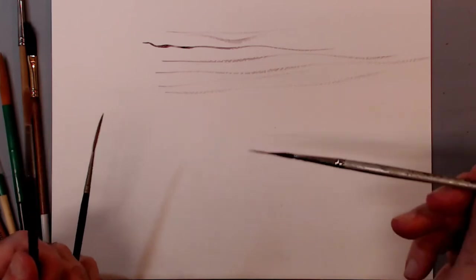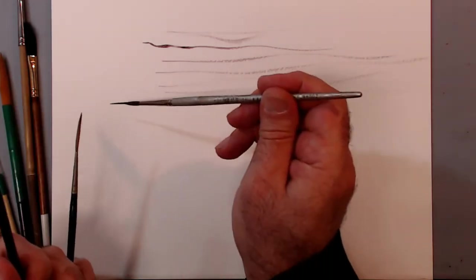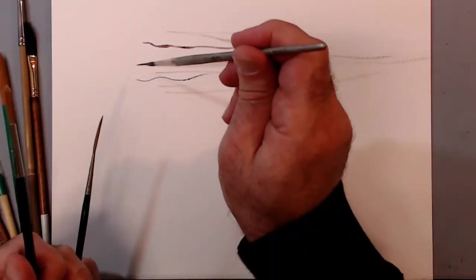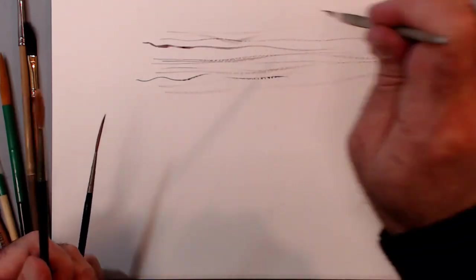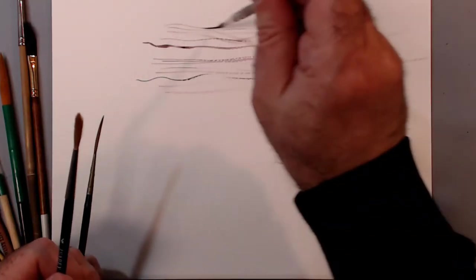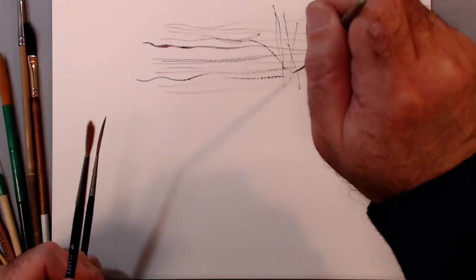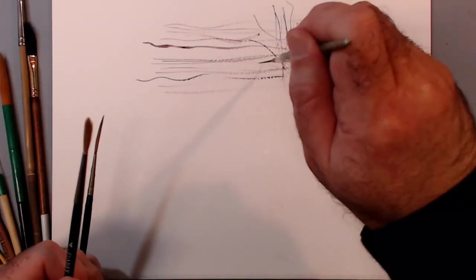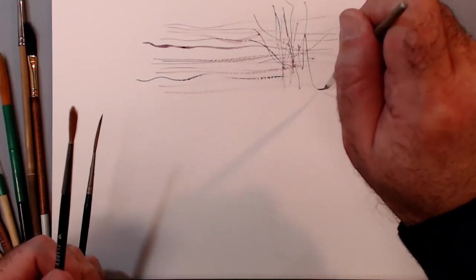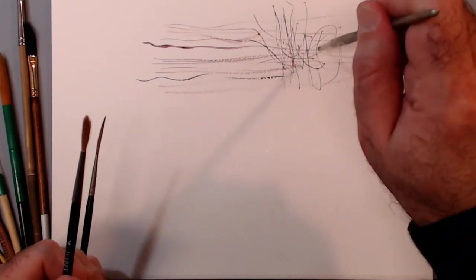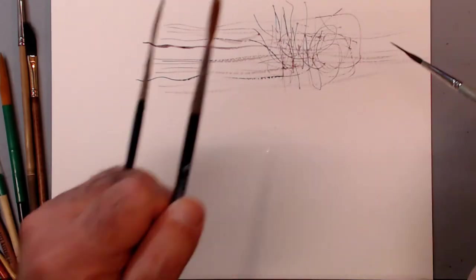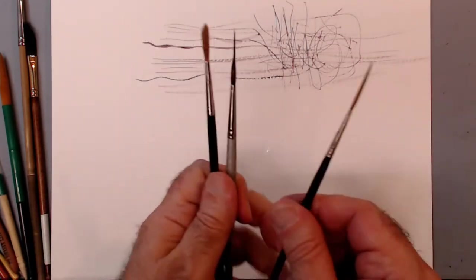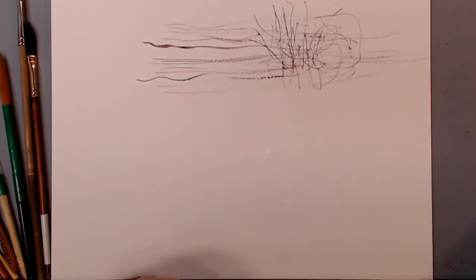This one holds more water in the reservoir, holds more color in the reservoir. So when you're doing the lines, it can do more lines for you because it holds more water. You don't have to go dipping all the time to achieve the results. So very nice brush and very useful because you can use it continuously for a longer period of time. So these are the riggers.